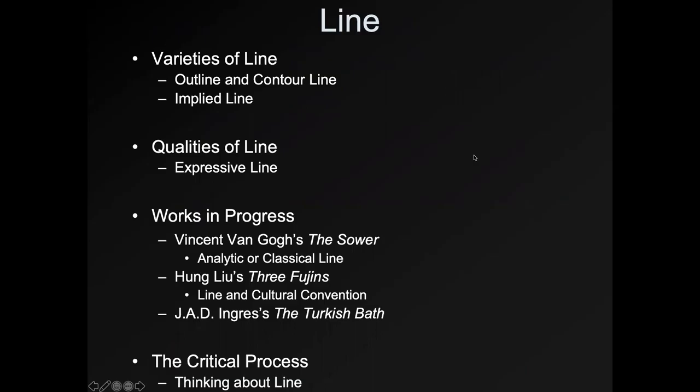This lecture will be about line. We'll talk about varieties of line, outline and contour line, implied line, qualities of line, and expressive line. We'll look at Vincent van Gogh's The Sower, the contrast between analytic or classical line, Hung Lu's The Three Fujians, line and cultural convention, and Ingres' The Turkish Bath. We'll end with a final slide that brings everything together.